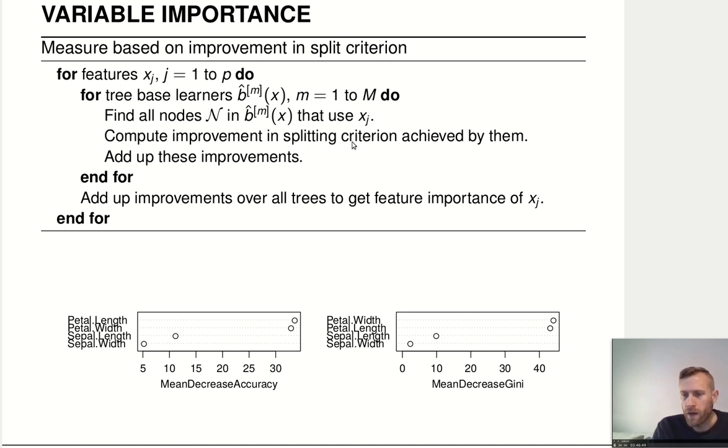We compare the impurity of the node before the split and the impurity in the nodes after the split, or if you don't want to talk about impurity, talk about the empirical risk in the parent node that's using that split, and then the empirical risks in the two child nodes of that node. And we just take the difference, so we note down how much improvement did that bring us. And we note these up, we add them up, and we add them up over all the trees to get the feature importance of XJ.